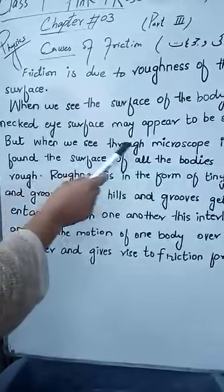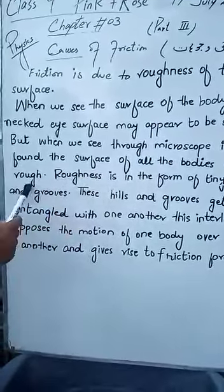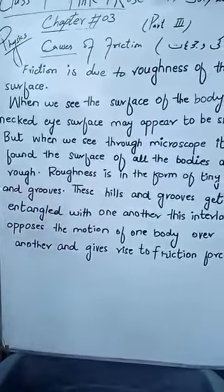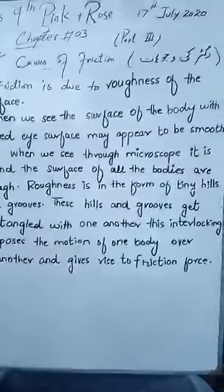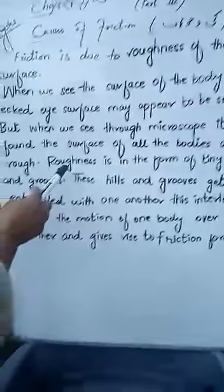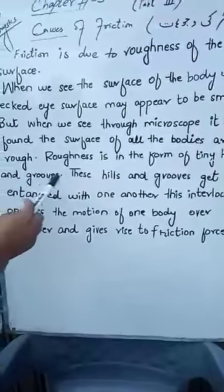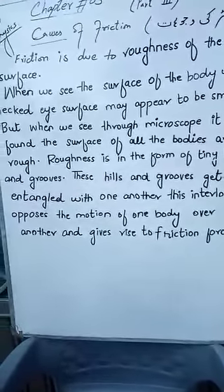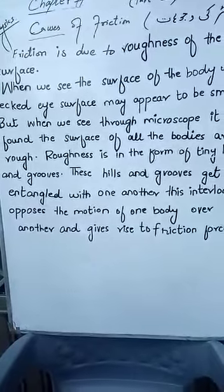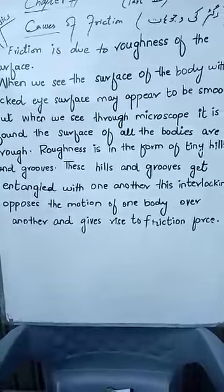But when we see through the microscope, it is found that the surface of all bodies is rough. The roughness is in the form of tiny hills and groves. These hills and groves get interlocked with one another. This interlocking opposes the motion of one body over another body and gives rise to friction force.